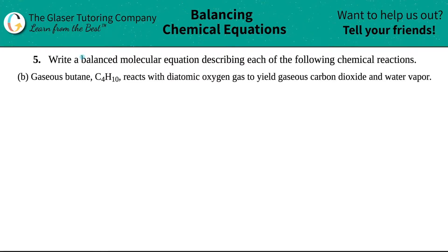Number five, write a balanced molecular equation describing each of the following chemical reactions. And then we have B of the group. This one says gaseous butane, which is C4H10, reacts with diatomic oxygen gas to yield gaseous carbon dioxide and water vapor.